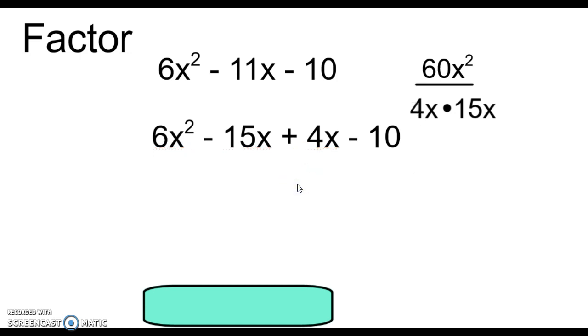Once you have this, you are going to work with two terms at a time. So look at these first two terms. What do they have in common? What is their GCF? Well, we can take out a 3x. We then write what's left. When we divide by 3x, we have 2x - 5.